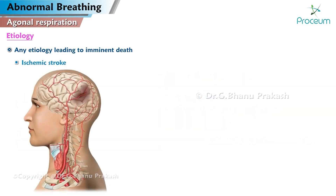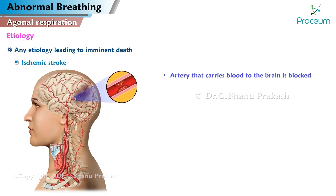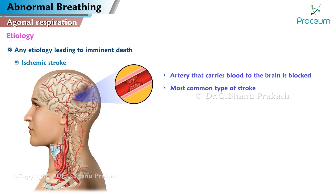Ischemic stroke is another etiology. This type of stroke happens when an artery that carries blood to the brain is blocked. It is the most common type of stroke, accounting for about 87% of all strokes.